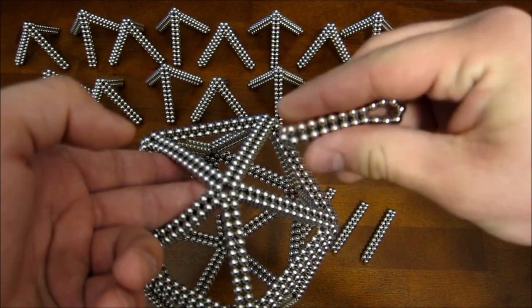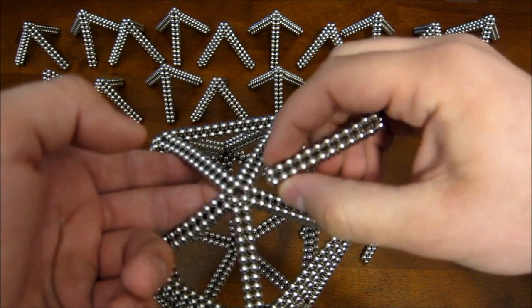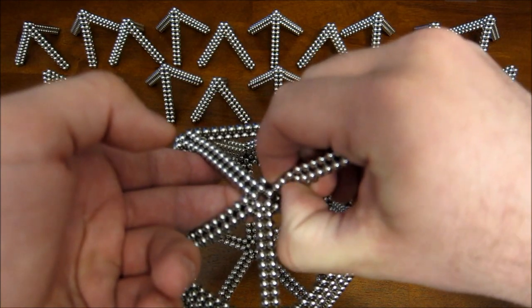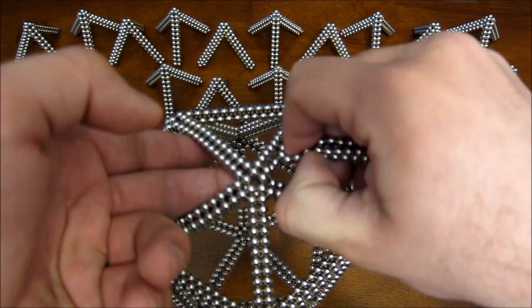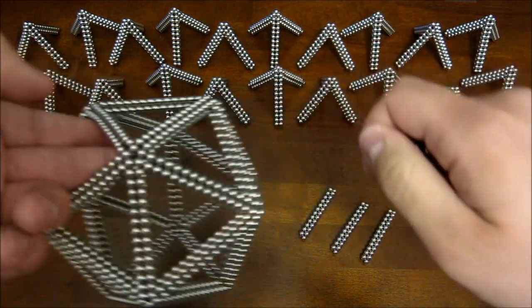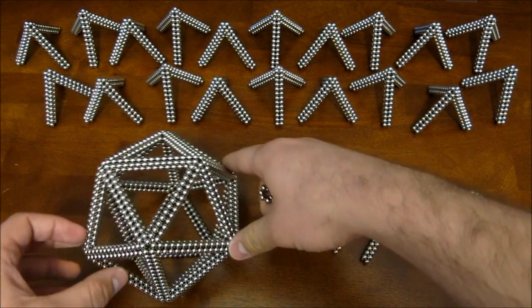Instead, you rotate that. That actually switches the polarity by the way. And then that'll just pop in nice and strong like that, strong enough to where it screws up the icosahedron a little bit as I try to take it off. But it's all fixed.